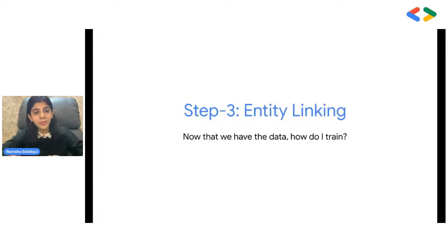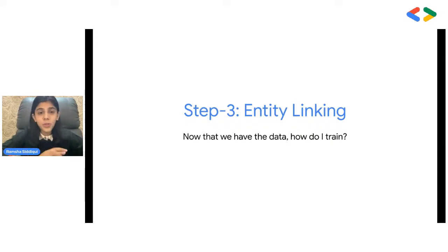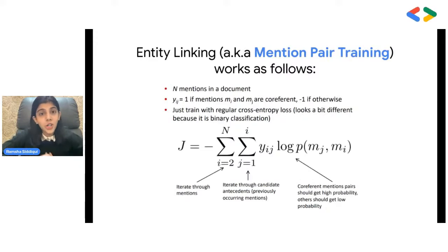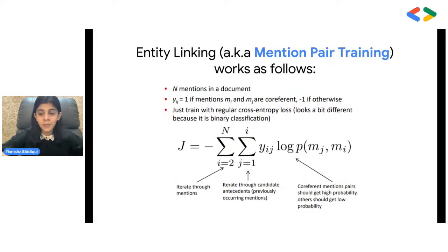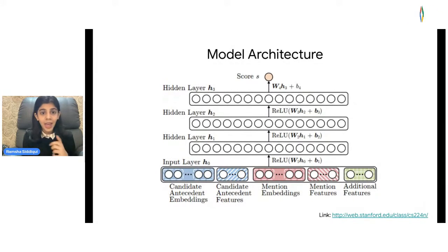The third step is defining the model for entity linking. The training data would be pairs of mentions, and for each pair we optimize binary cross-entropy loss of whether or not it's a coreference pair. A simple architecture starts by concatenating the vectors of every mention and candidate along with additional features, passing them through a deep neural network.